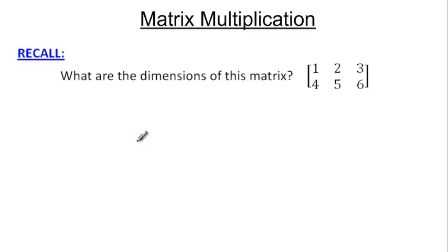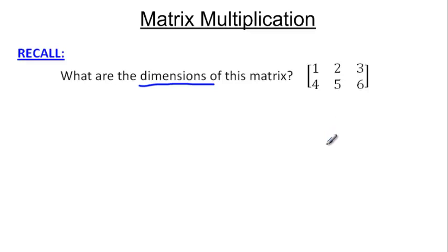The first thing to look at is I want you to remember how to work with dimensions, because if you don't know how to do dimensions of matrices, there's no way you're going to be able to multiply them. So remember this: rows are first. You should have come up with that this is a 2 by 3 matrix, and that's how we would write that out — two rows and three columns.